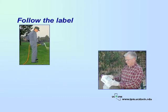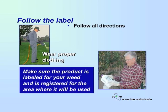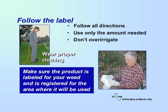Be sure to use caution before, during, and after using any pesticide. Follow all directions on the product label and wear the proper protective clothing. Check the label for the active ingredient. Make sure it is labeled for the type of weed you are trying to control and that it is registered for the area where you are planning on using it. Only use the amount needed and mix it up appropriately. When using herbicides, avoid washing them into storm drains. Don't apply right before rain is expected and don't over-irrigate. As required by the Healthy Schools Act, be sure to post warning signs where pesticides are applied 24 hours in advance and 72 hours after application.